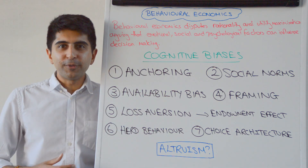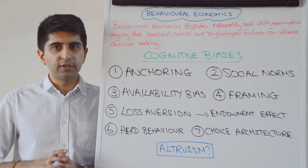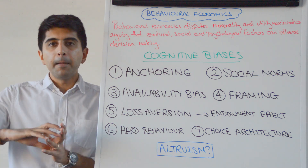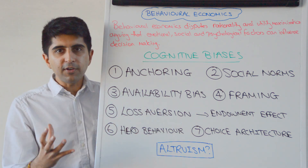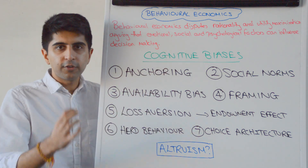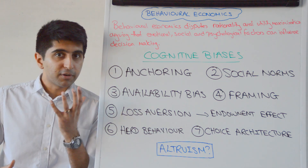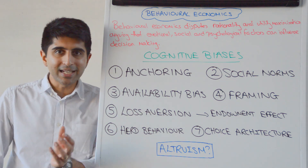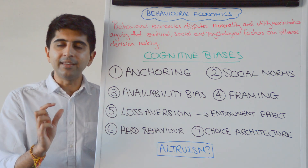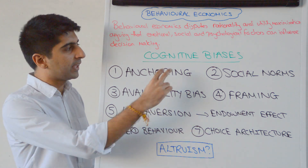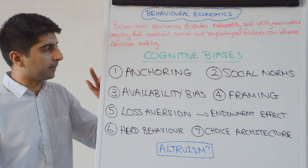Hi everybody. Behavioral economists would argue that there are some times where consumers don't make rational, utility maximizing decisions based on the information around them purely on their own. Behavioral economists argue that sometimes emotional, social and psychological factors can influence decision making, which can prevent rationality and utility maximization taking place. Those factors are known as cognitive biases. Let's have a look at what some of those biases are and how they can influence decision making.